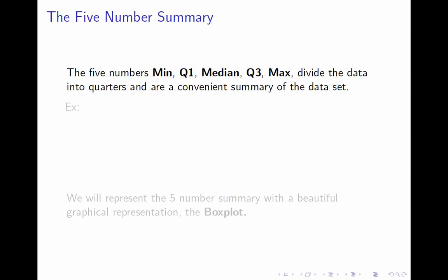These five numbers, the minimum of a data set, which is the lowest value of course, Q1, the 25th percentile, the median, Q3, and max, the maximum value, those five numbers are called the five number summary, and they divide the data into quarters and give you a nice picture of what's going on.